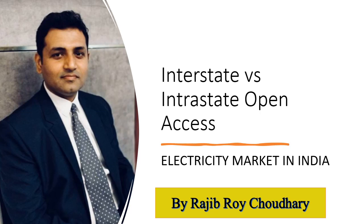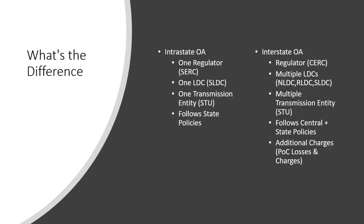For those who have seen earlier videos on open access, the major difference is between intrastate and interstate open access. Intrastate open access means the generator supplying power and the consumer consuming power are both within the same state. Under intrastate open access, you are dealing with only one regulator — the State Electricity Regulatory Commission — so all policies, disputes, or arbitration between generator and consumer go to that single regulatory commission.